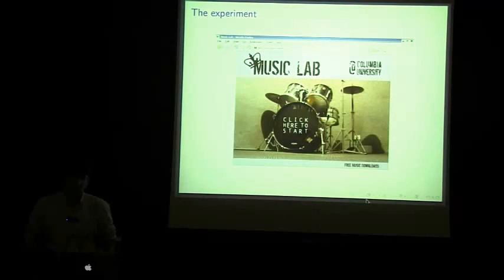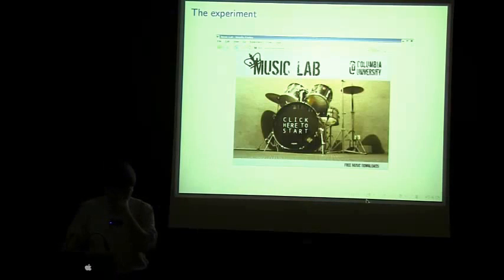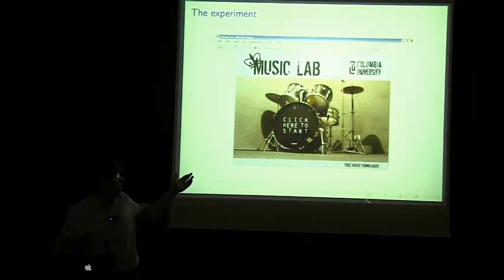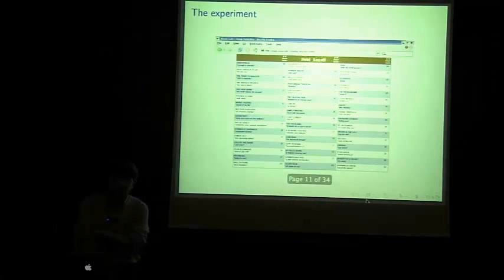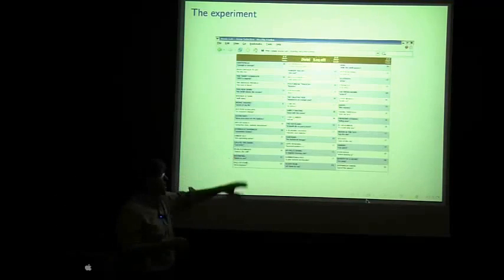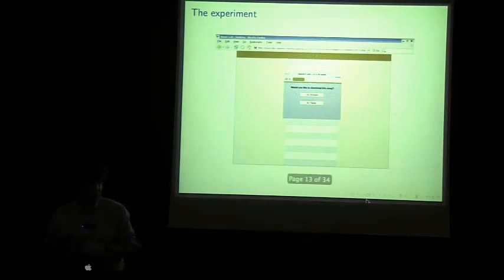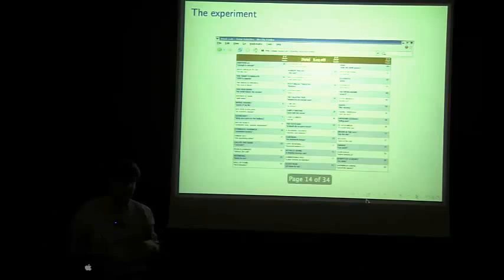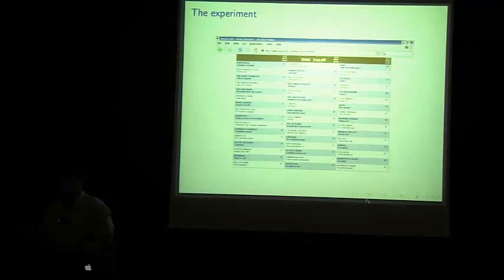Okay. So, what did the website look like? People came to this website, musiclab.columbia.edu, so that it was clear that they were participating in a scientific research project. After clicking through this, they were taken to a consent form, then they filled out a brief survey, taken to a page of instructions, and then they saw this. This is 48 songs by up and coming but unknown bands. They could click on one that looked interesting to them. The song began playing, and they were asked to rate it on a scale of one to five stars. And then they were offered the chance to download the song. After that, they were taken back to the song menu, and they could listen as many times as they want. So, that's the experience an individual user had.